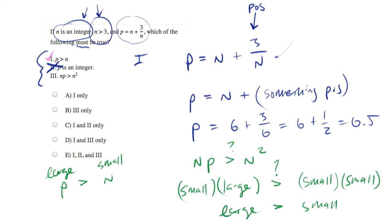So statement 3 is always true. So we want the answer which says 1 and 3, which is D.